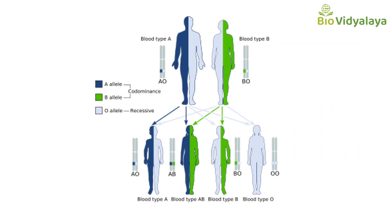Looking at this picture, you can see three different alleles for ABO blood group: the A allele (I^A), the B allele (I^B), and the O allele (small i). The I^A and I^B alleles are dominant alleles, while small i — the O allele — is the recessive allele. The father's blood group is A with genotype I^A i, so he is heterozygous for blood type A. The mother's blood type is B with genotype I^B i, so she is also heterozygous for blood type B.